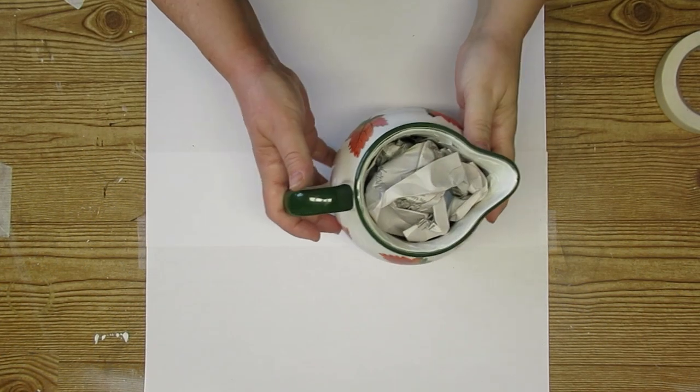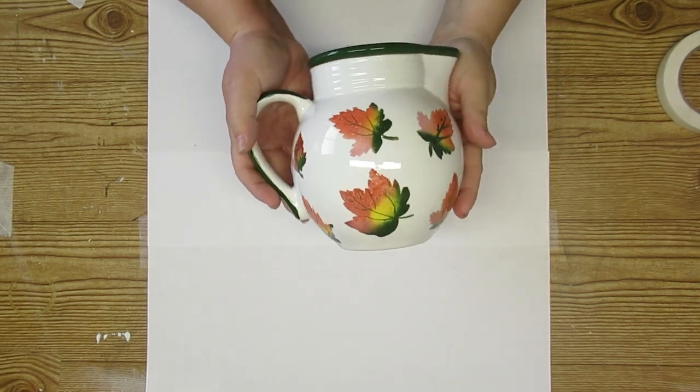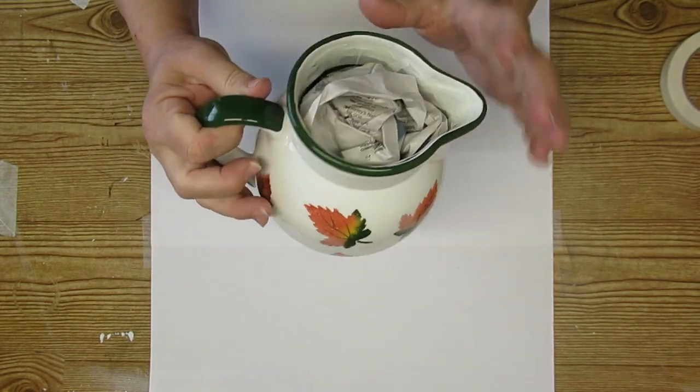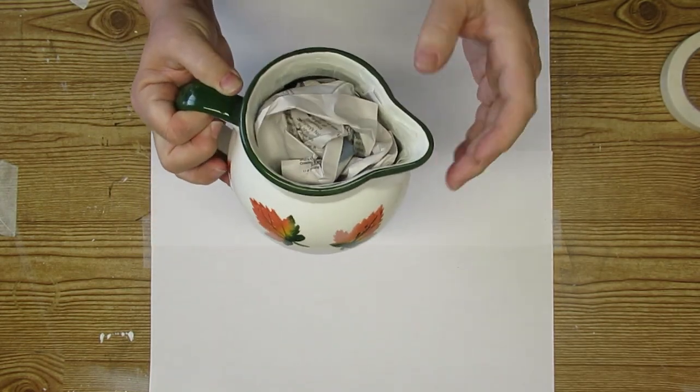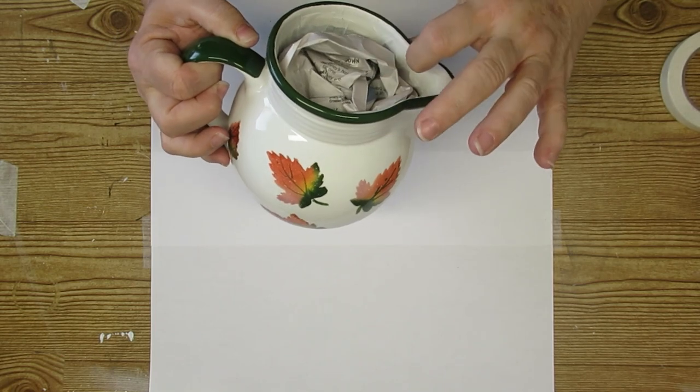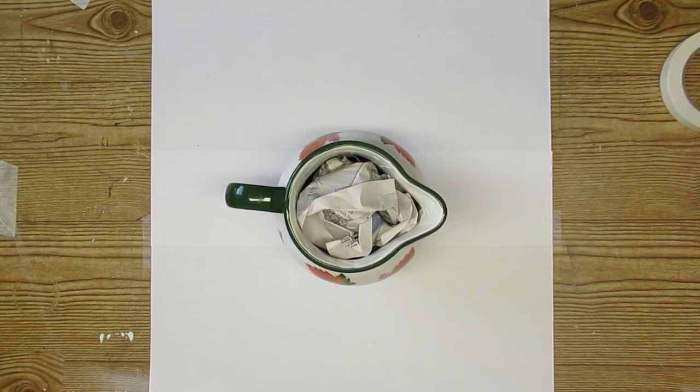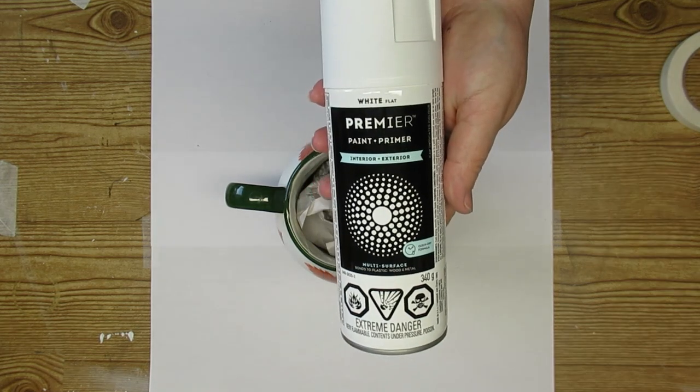My second thrift flip is this jug that I picked up for $2.99. It has a beautiful shape to it. I love that it's nice and round and squat and I love the little spout and the ridges on the rim at the top. It does need a fix up though. I taped off the inside and stuffed it with newspaper to make sure that I didn't get any paint on the inside. That will make it still a usable piece.